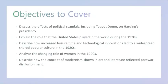Warren G. Harding's presidency was marred by a series of political scandals, most notably the Teapot Dome scandal. These scandals rocked the nation and tarnished Harding's reputation, revealing widespread corruption and cronyism within his administration.